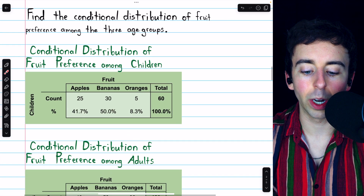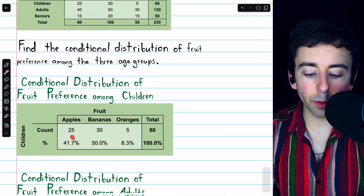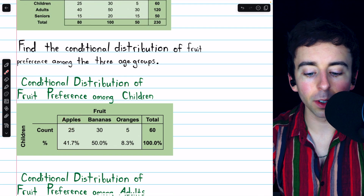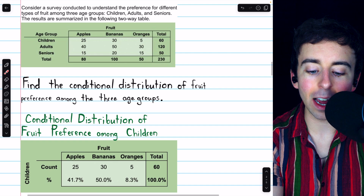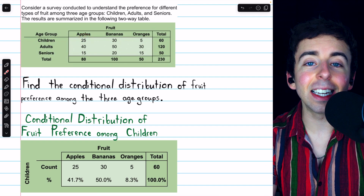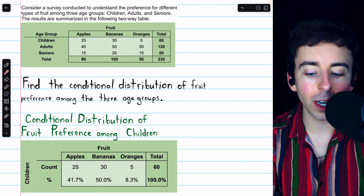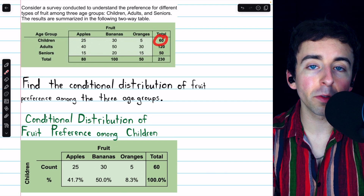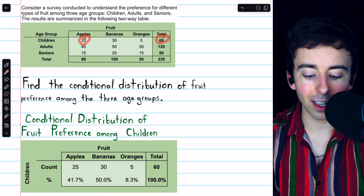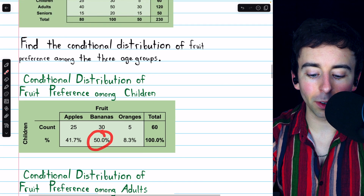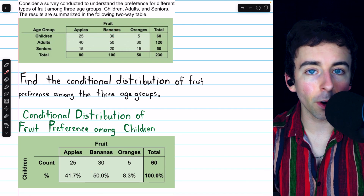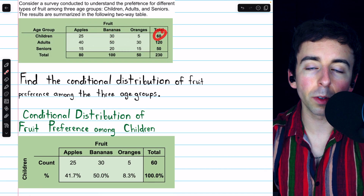Let's take a closer look at some of these. We see 41.7% of children said they preferred apples. We find that by taking the number of children who preferred apples, 25, and dividing by the total number of children, 60. So we do 25 divided by 60. Just like to get 50%, we take the number of children who said they prefer bananas, 30, and divide by the total number of children, 60.